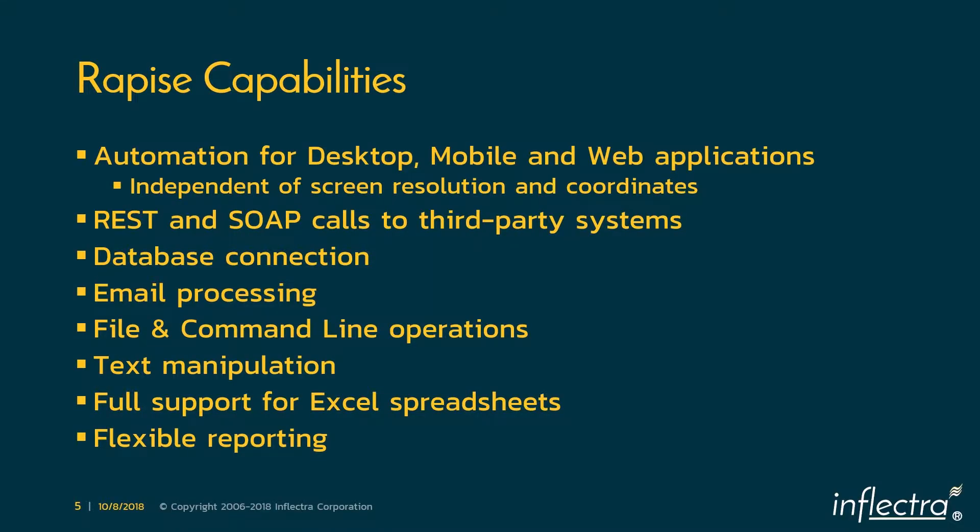RAPEES is our automation tool designed for both test automation and robotic process automation. It can handle automation of various types of applications — in today's demonstration we'll be looking at Dynamics NAV, a desktop application, but it's also very capable of dealing with mobile and web applications. It can handle web services and get its data from various sources: SQL or ODBC databases, email systems, flat files, command line operations, text manipulation, and it has full support for reading and writing Excel spreadsheets without Excel being installed. It also has flexible reporting and orchestration.